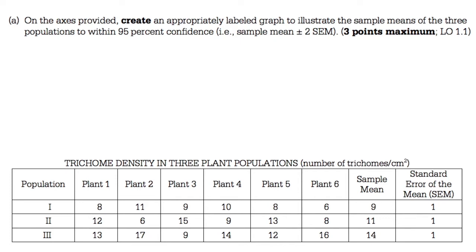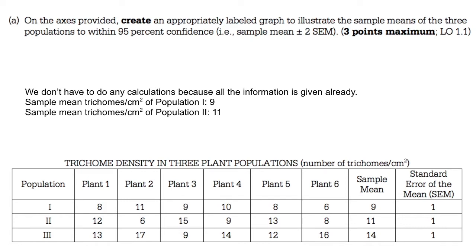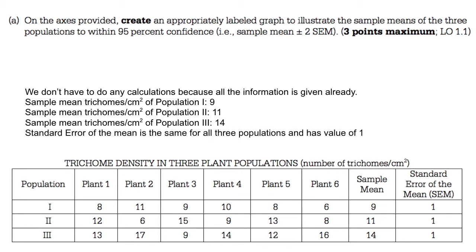First let's gather the information we know to graphically represent these confidence intervals. We want the sample mean — the point estimator — for each of these populations, and we want the standard error. Fortunately, both of these are in the table, so we don't have to do any calculations. For population 1 the sample mean is 9 trichomes per centimeter squared, for population 2 it's 11, and for population 3 it is 14. The standard error is the same for all three populations — its value is 1.